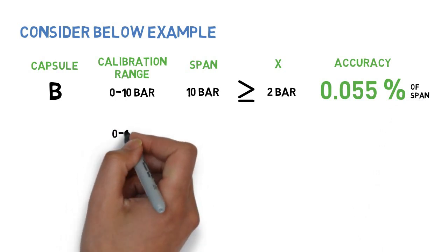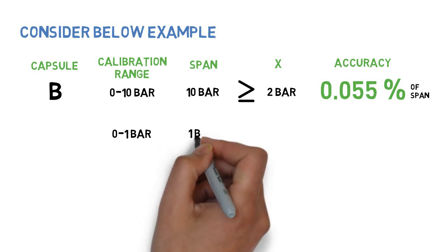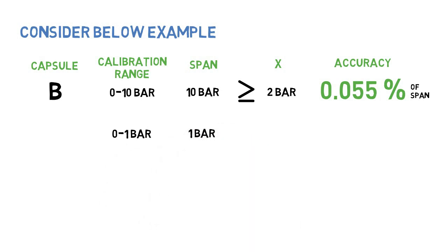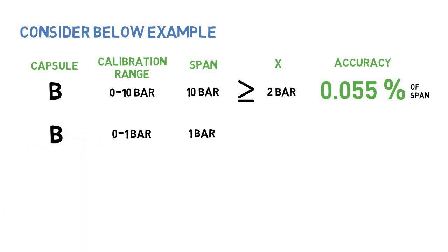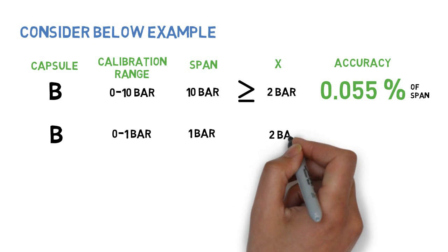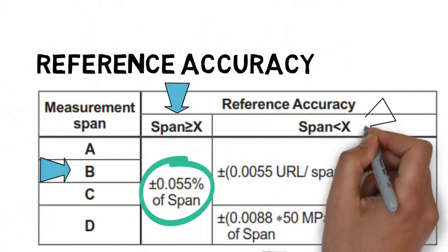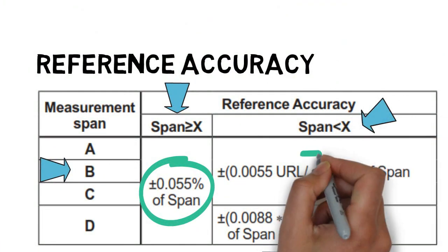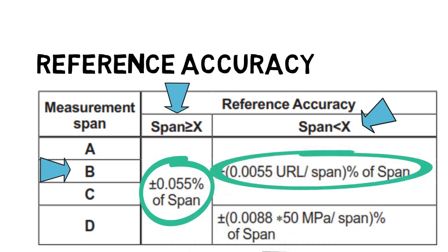Consider another range of 0 to 1 bar. Span is 1 bar. Maintain capsule same as B. Span is lesser than X. When span is lesser than X, accuracy shall be calculated as per formula given in this table.